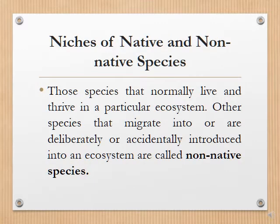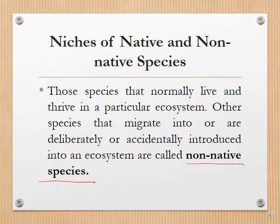Native species are those that normally live and thrive in a particular ecosystem. Other species that migrate into or are deliberately or accidentally introduced into an ecosystem are called non-native species, also referred to as invasive species, alien species, and sometimes exotic species. Some people think non-native species are always a villain, but that is not true in all cases, as most introduced and domesticated animals like chickens, cattle, and fish from around the world are beneficial to us. However, some non-native species can threaten a community of native species and cause unintended and unexpected consequences.